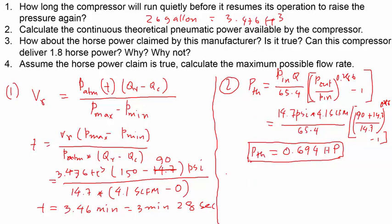90 psi plus 14.7 divided by 14.7 power 0.286 minus one. So I have calculated that 0.694 horsepower. Even though it says it develops 1.8 horsepower, I don't know where that thing comes from. This is what you will have continuously available for work. So horsepower. That's question number two. Question number three is, yeah, how about this horsepower? So it might develop a peak power, 1.8 horsepower, sometimes a burst of power, but not really continuously available. So this is what you have for the work continuously available, because it says the compressor is rated between 90 to 150 psi.